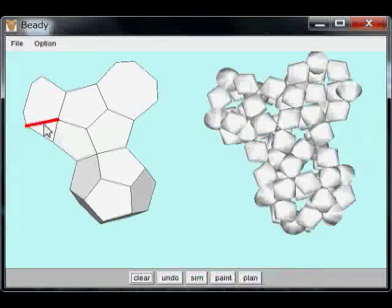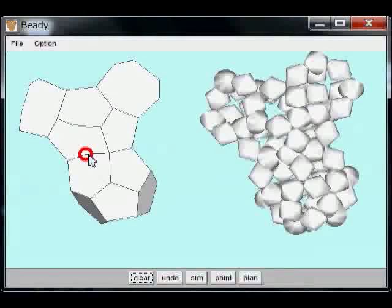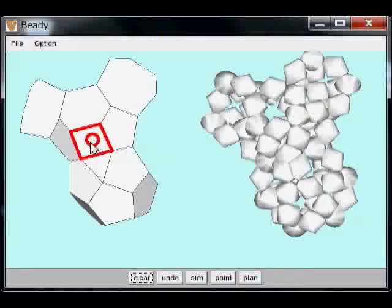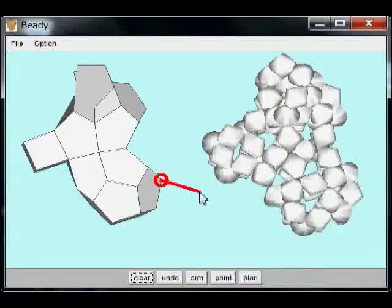Dragging an edge deletes the edge. Clicking on an edge splits the edge. Dragging a vertex to another vertex inserts a new edge. Dragging a vertex outwards adds a chain.